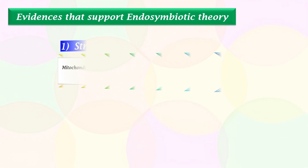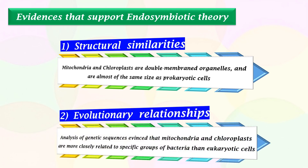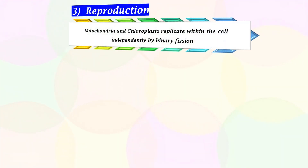Let's talk about a few evidences that support the endosymbiotic theory. The first one is structural similarities: both mitochondria and chloroplasts are double-membraned organelles, and are almost of the same size as prokaryotic cells. Secondly, evolutionary relationships: analysis of genetic sequences evinced that mitochondria and chloroplasts are more closely related to specific groups of bacteria than eukaryotic cells. Thirdly, reproduction: mitochondria and chloroplasts replicate within the cell independently by binary fission.